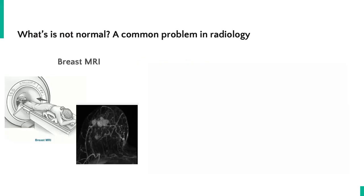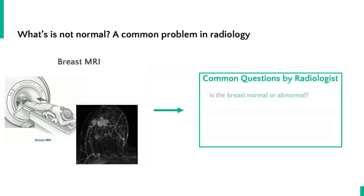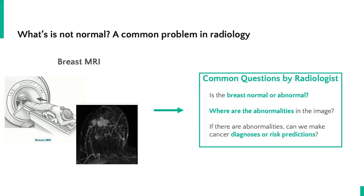A common problem in radiology is distinguishing between normal and abnormal exams. In the case of women with a high risk of breast cancer, an MRI is recommended every few years. This image shows a 2D projection of an MRI scan. A radiologist analyzes the full MRI scan trying to answer these key questions: Is the breast normal or abnormal? Where are the abnormalities in the image? If there are abnormalities, can we make cancer diagnosis or risk predictions?